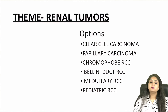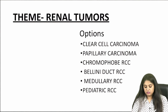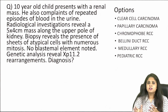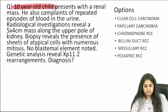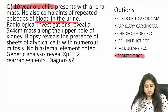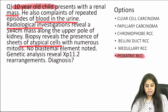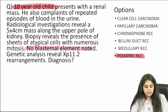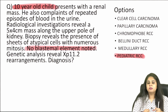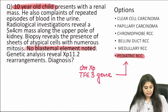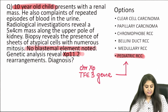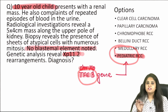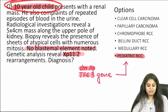Moving on to the next theme — renal tumors. Here we have a 10-year-old child with hematuria and a renal mass proven radiologically with atypical cells. There is no blastomal element noted, which rules out Wilms tumor (nephroblastoma). So it is an RCC showing a chromosome Xp11.2 translocation — that is pediatric RCC. Chromosome Xp has a gene called TFE3; if the TFE3 gene is affected, it is pediatric RCC, which matches the clinical history.